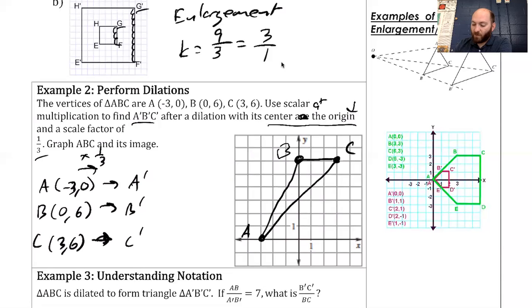To transform these, I'm going to take negative three times one third is negative one. Zero times one third is zero. Zero times one third is zero. Six times one third is two. Three times one third is one. Six times one third is two. There's my three new points for my image.